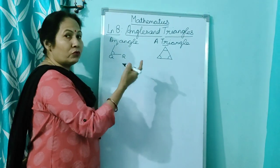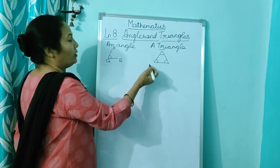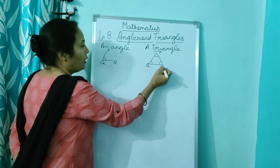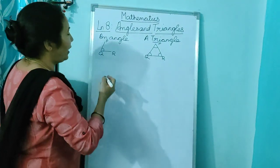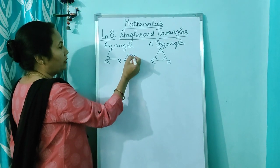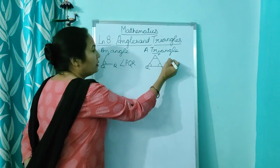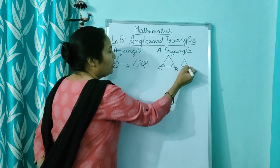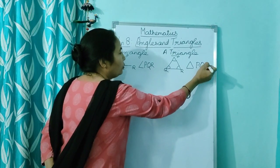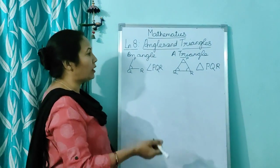A triangle also has a name. You can write any alphabet here, like P, Q, and R. Now for angle, you use this symbol and you write P, Q, R. And for triangle, you use this symbol and you write triangle PQR, and read it also as triangle PQR.